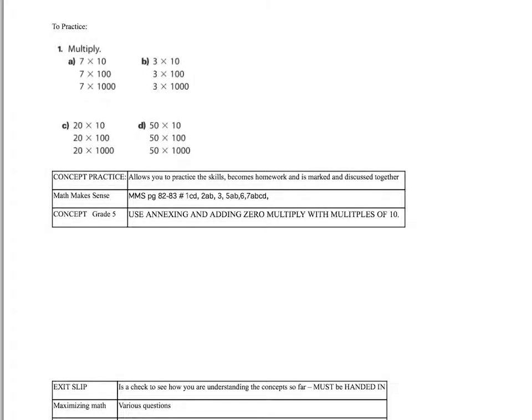All right, you're going to practice now without a calculator. Practice annexing zero. Take off that zero, multiply the numbers, and add the zero back on. Go ahead and press pause and try A, B, C, and D now.